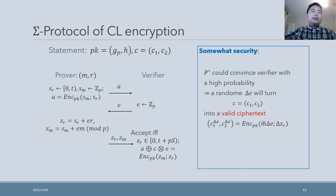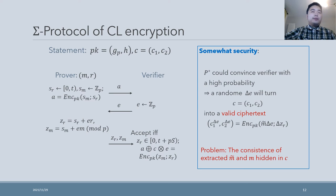Suppose that P* could convince the verifier with high probability. Then, for a random Δe, the probability that Δe certifies our analysis is also high. Therefore, one could choose a random Δe and try to extract M-tilde using the secret key. However, there is a question: how could we know that the extracted message is what we want? In other words, how could we ensure the consistency of the extracted message and the message hidden in ciphertext C?